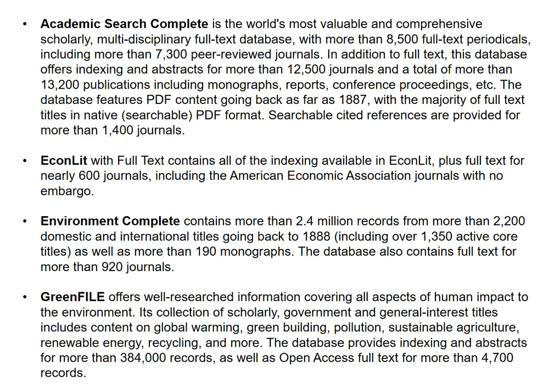The second database is EconLit, which gives us full text for over 600 journals of economics. The third is Environment Complete, with full text for journals and monographs going back to 1888. The fourth is Green File, which offers scholarly, government, and general interest titles on aspects of human impact to the environment. I will click the box in front of these titles to select them, then click Continue at the bottom of the list.